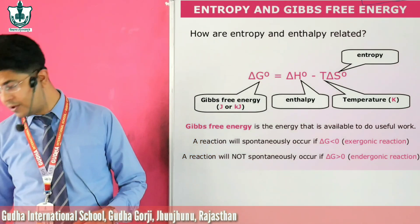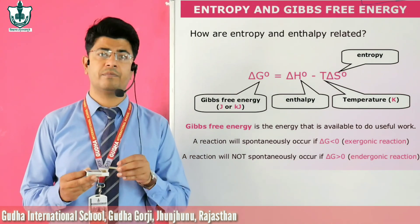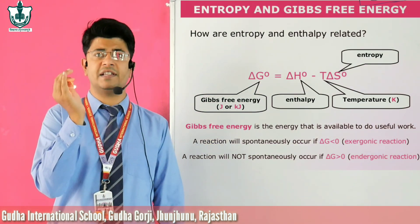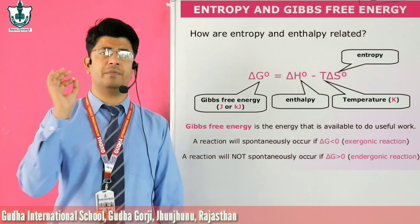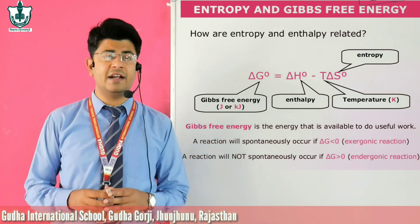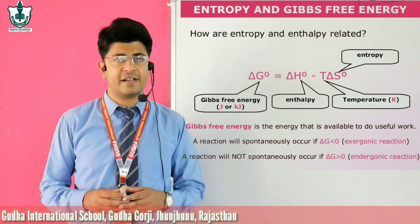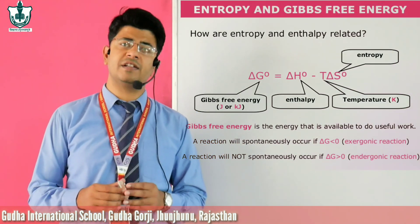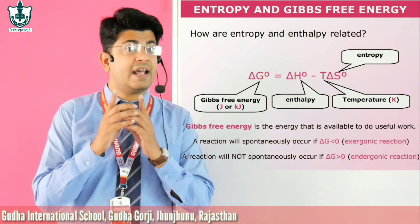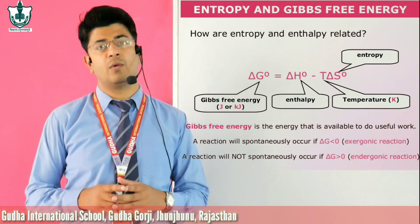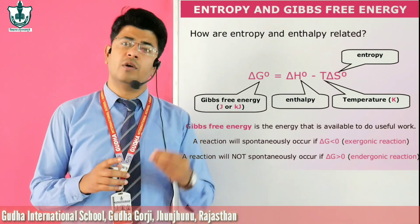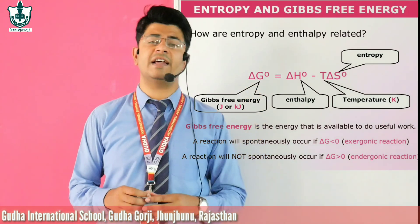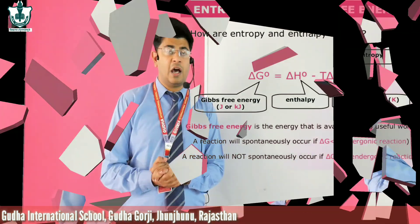Let me explain this through an example. I have a matchstick in my hand. If I burn this matchstick, a chemical reaction takes place — the hydrocarbon present in the matchstick is converted into CO₂ and water vapor. During this process, chemical energy is converted into heat and light energy. For example, if we assume 10 joules of energy is released, 2 or 3 joules will be used to increase or decrease the entropy, temperature, or other factors — so not all 10 joules can be transformed into work.